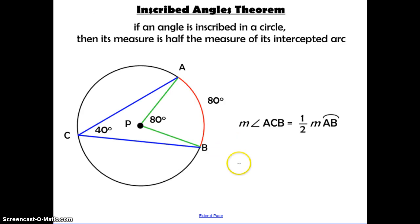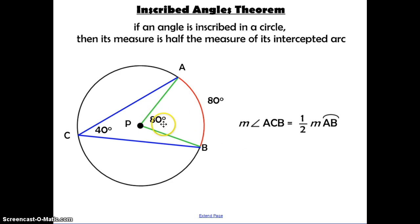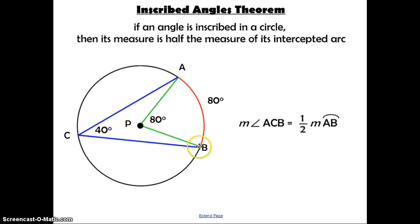The Inscribed Angles Theorem says that if an angle is inscribed in a circle, then its measure is half the measure of its intercepted arc. Last time we talked about how the central angle is the same measure as that intercepted arc. So if we use those same endpoints A and B and draw an inscribed angle, this angle measurement is going to be half of that arc. Since this arc is 80, the inscribed angle will be 40.